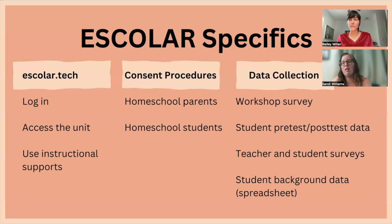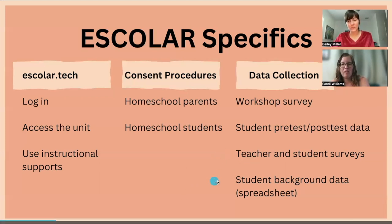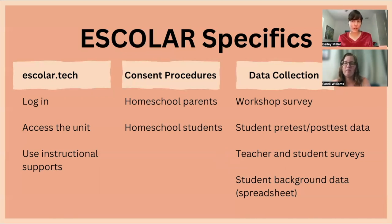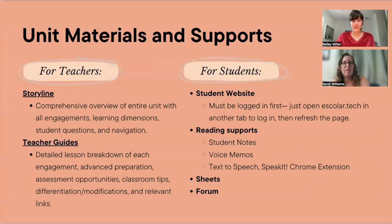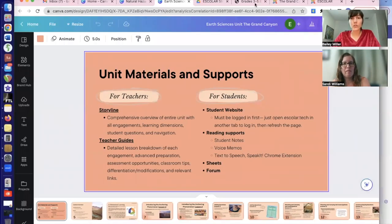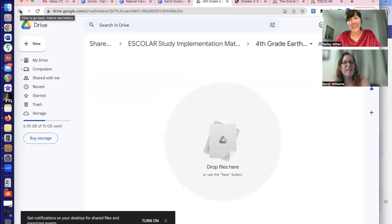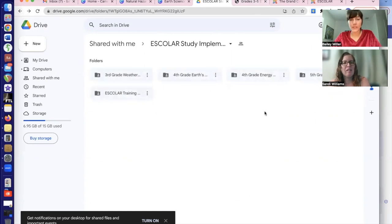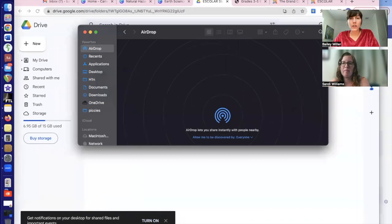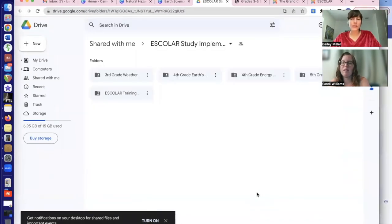The student background data spreadsheet has already been secured, so we're good there. For materials and supports, there's the storyline and the teacher's guide breaking down every single engagement of every lesson — available in the usual Google Drive folder. The fourth grade Earth Systems unit folder will have everything added shortly. Since you did the Home Run unit, we've made edits to the teacher guides, including a differentiation and modification section for every single engagement.